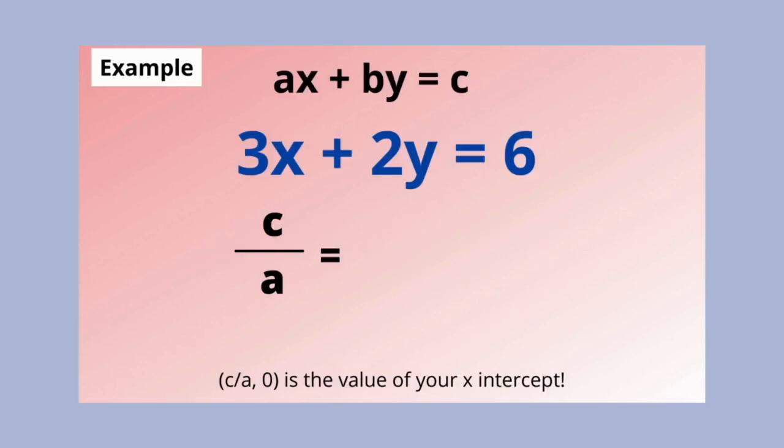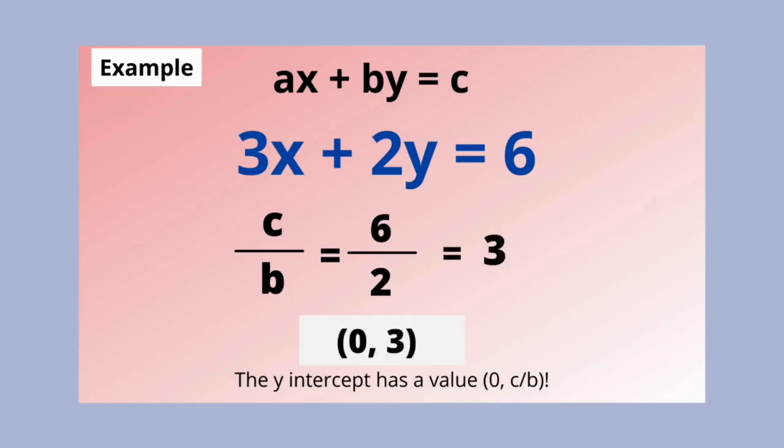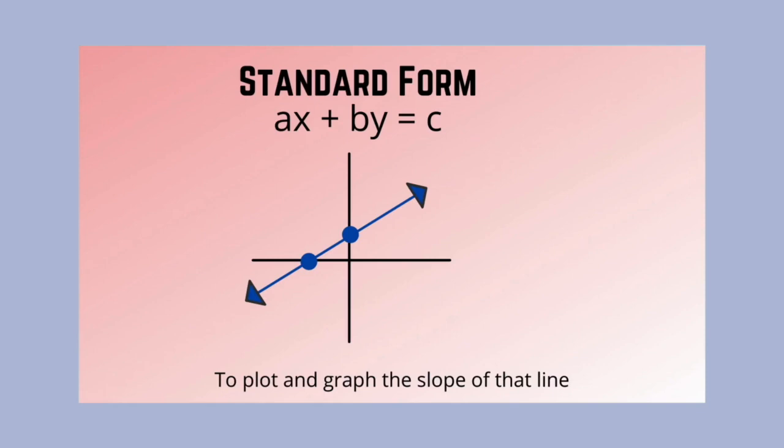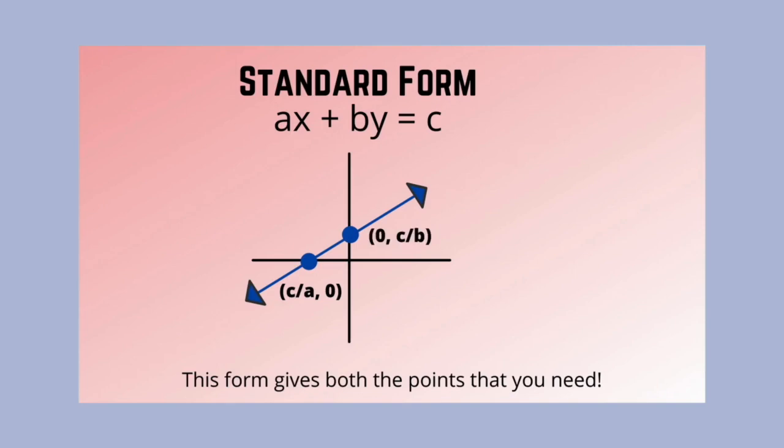The x-intercept has a value of c over a. The y-intercept has a value of c over b. To plot and graph the slope of that line, this form gives both the points that you need.